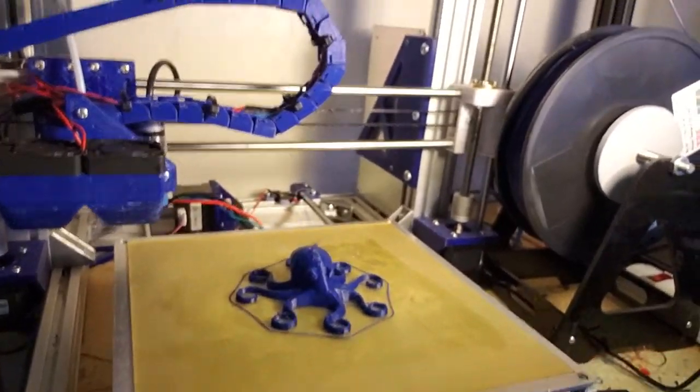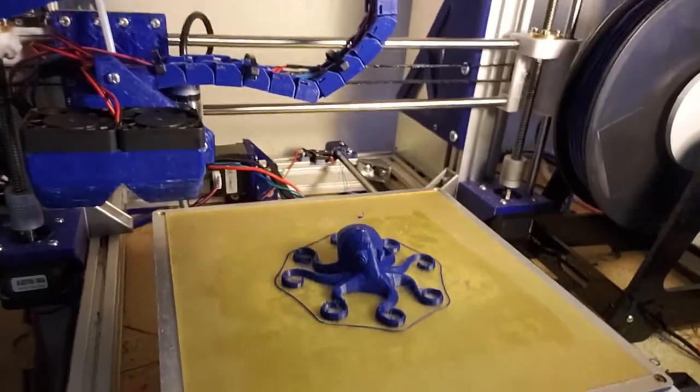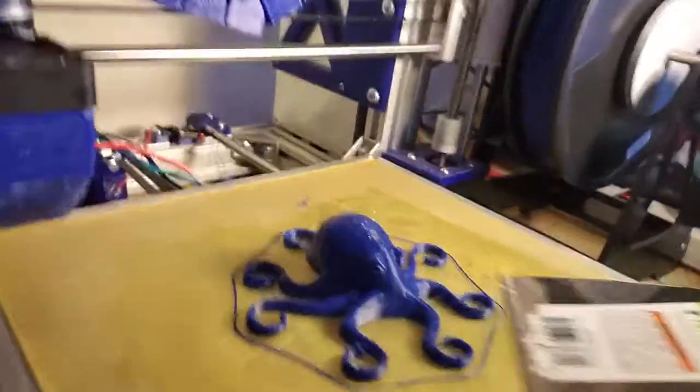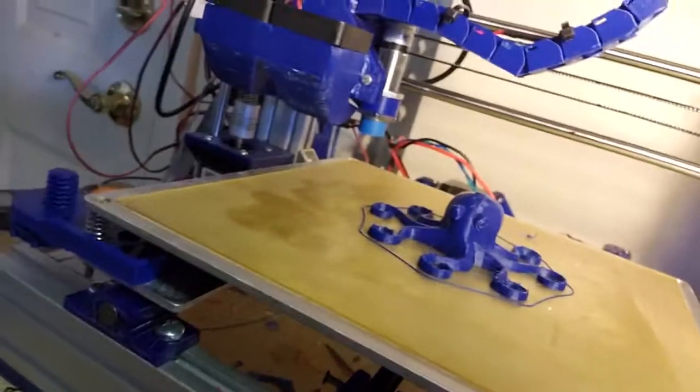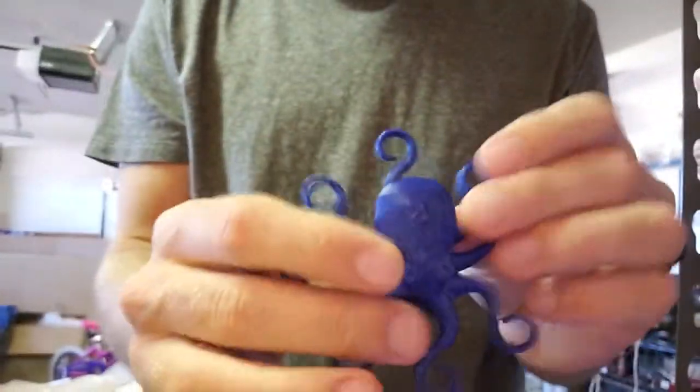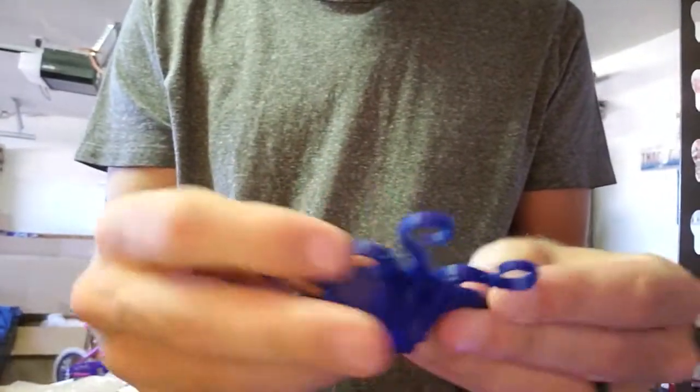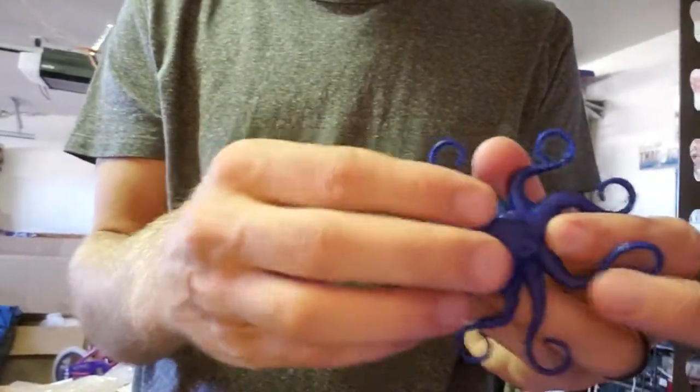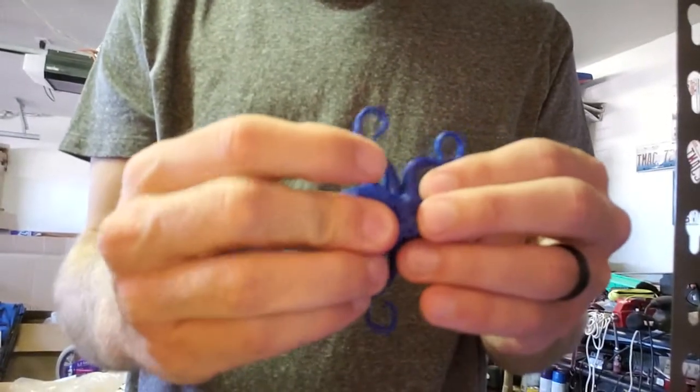This guy right here—you know him as the flexible octopus. You've probably seen him around. We're going to get him off the build plate. So you can see the flexible octopus that I printed on this AM8 printer.